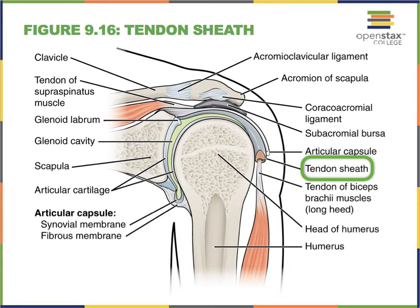Here we see the tendon of one of the heads of our biceps brachii. The biceps brachii has two heads—that's why it's called the biceps, for two heads. Notice that wrapped around the tendon of our biceps brachii, we have a sheath.